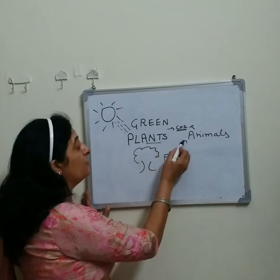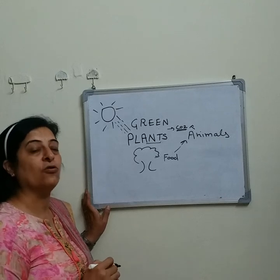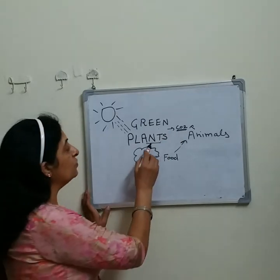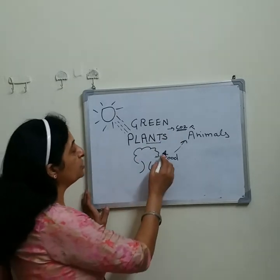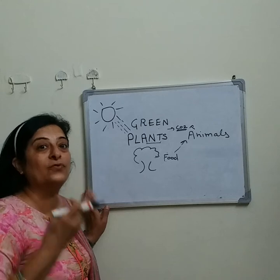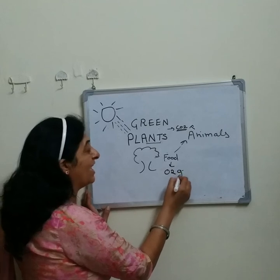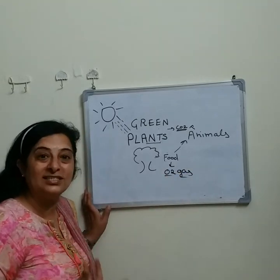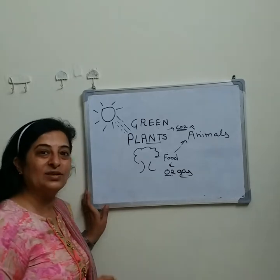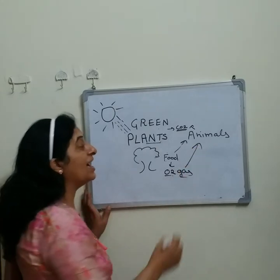Plants give us the food, and the animals give the plants the carbon dioxide gas. This carbon dioxide gas is used by the green plants for the process of photosynthesis. They prepare food as well as they give out oxygen gas, which is a life-giving gas. This oxygen gas is essential for the process of respiration, so this oxygen is taken by the animals.